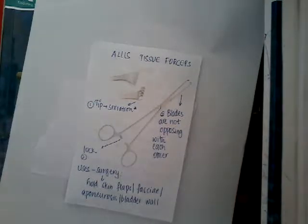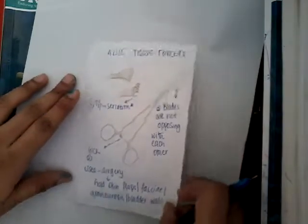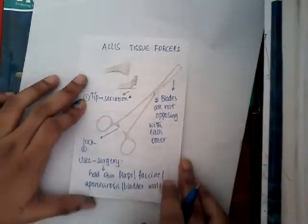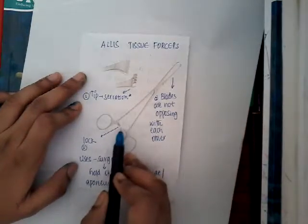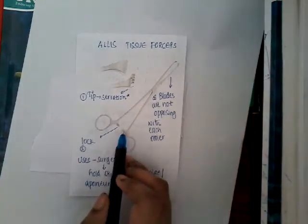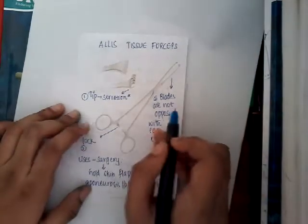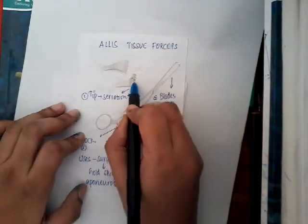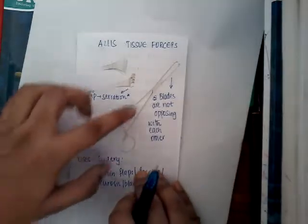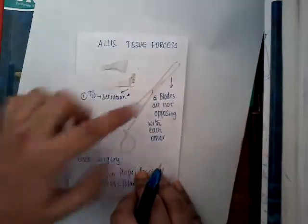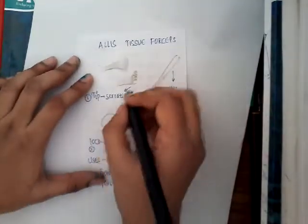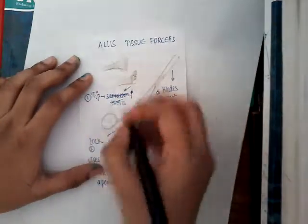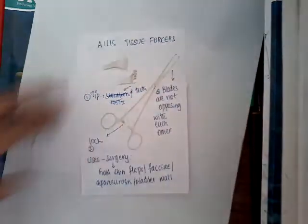Before going to the gynecological uses, I will just refresh the key features. Allis Tissue Holding Forceps has a lock which helps in self-retaining. It has two blades that are not opposing each other. If you see the tip, it has many teeth at the tip — we cannot say it has serrations, but it has many teeth.